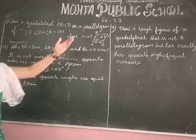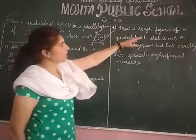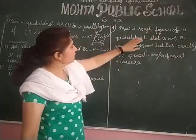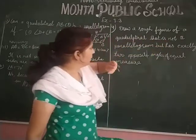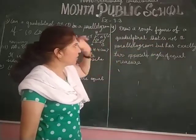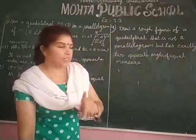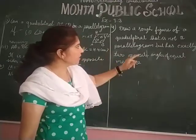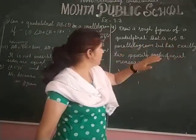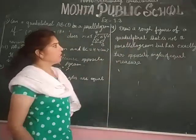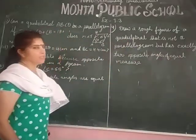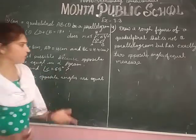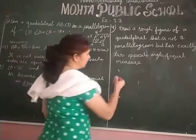Next question: draw a figure of a quadrilateral that is not a parallelogram, but has exactly two opposite angles of equal measure.